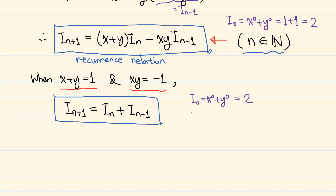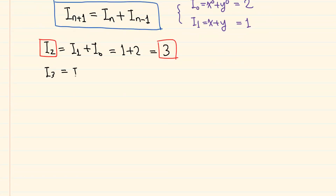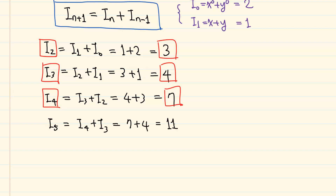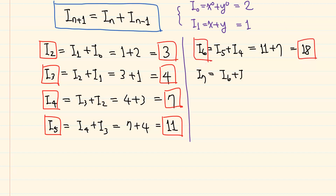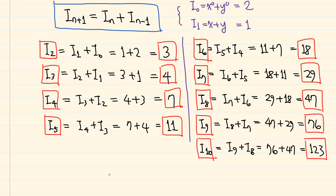We have i(0) equals 2 and i(1) equals 1. Using this relation, we can simply calculate: i(2) equals i(1) plus i(0), so 1 plus 2 equals 3. i(3) equals i(2) plus i(1), so 3 plus 1 equals 4. i(4) equals 4 plus 3, so 7. And we can go on and on. These are the answers.